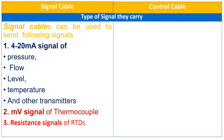In an instrumentation system, the signal cable can be used to send the following signals. Number 1, the 4 to 20 mA signal of pressure, flow, level or temperature transmitter and other transmitters. Number 2, millivolt signal of thermocouples. And number 3, the resistance signal of RTD.